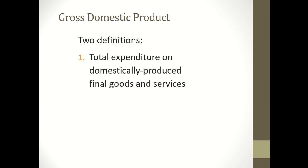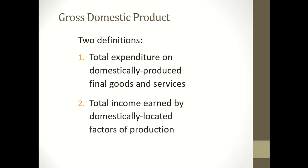There are two definitions of GDP. The first is: total expenditure on domestically produced final goods and services — if we sum up all expenditures on domestically produced goods and services, we get GDP. The second definition is: total income earned by domestically located factors of production within a particular time period, such as one year.